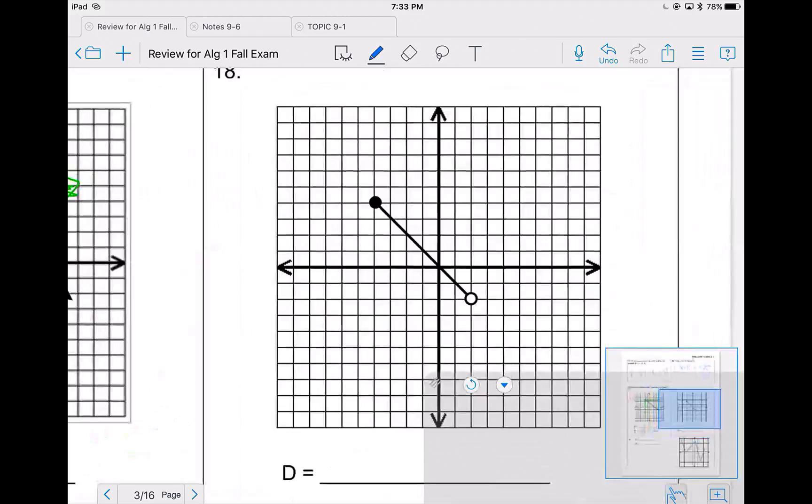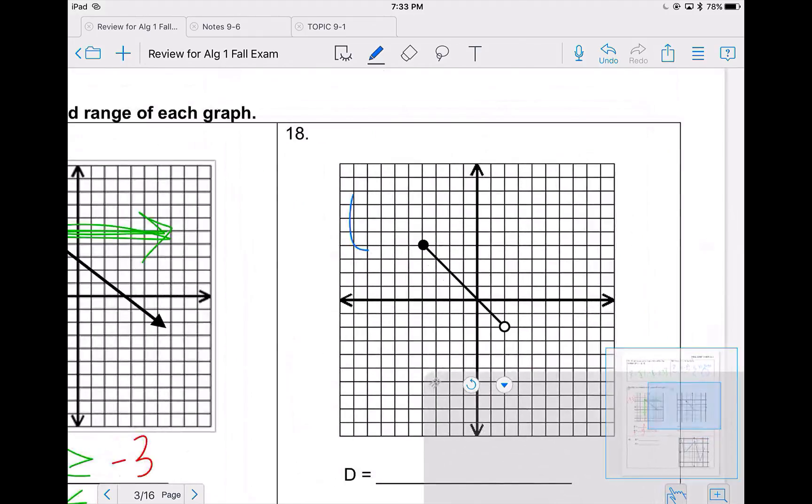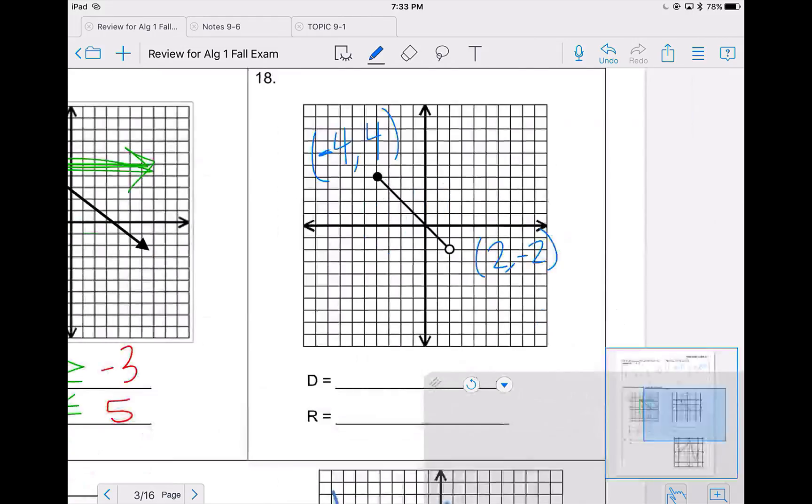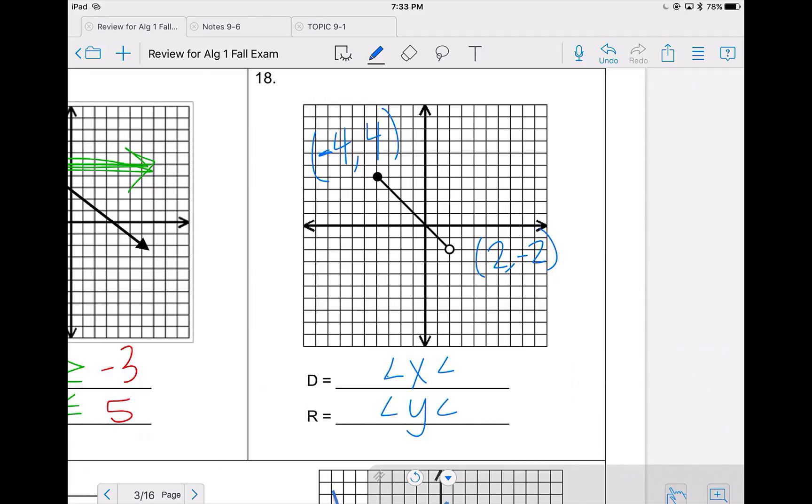18, my two points are negative 4, 4 and 2, negative 2. So remember with this one, when we have two endpoints, we have two inequalities. We always write them least to greatest so that we can use less than signs. So looking at my x's, I have negative 4 and 2. Negative 4 is smaller, 2 is bigger. When x is negative 4, I have a filled in bubble. So I put the line under the inequality. With my y's, I have 4 and negative 2. Negative 2 is smaller, 4 is the bigger. And at 4, I have the filled in bubble. So I put the line under that inequality.